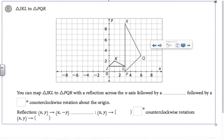In part B, notice that we can map triangle JKL to PQR with a reflection over the x-axis followed by a dilation, followed by some angle counterclockwise rotation about the origin. Let's visualize where triangle JKL would land after that reflection across the x-axis. If I were to take triangle JKL and reflect it over the x-axis, then J prime would be here, K prime here, and L prime there.